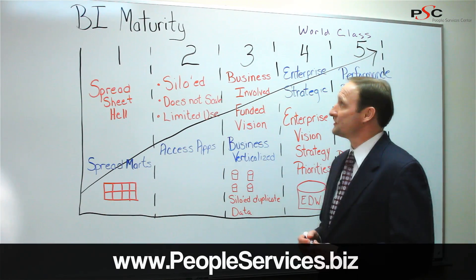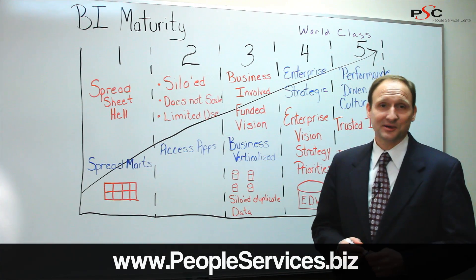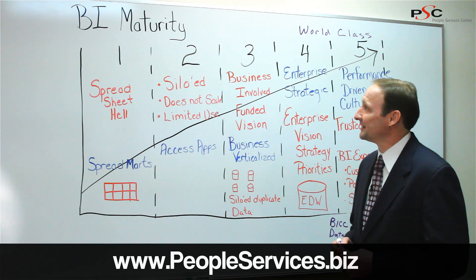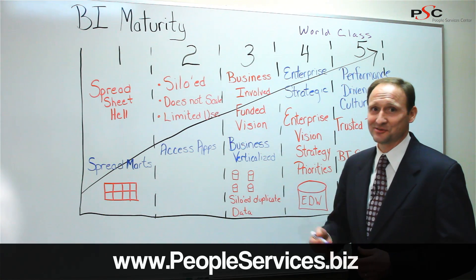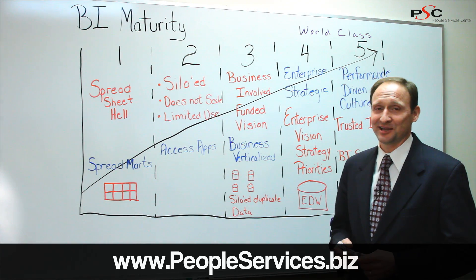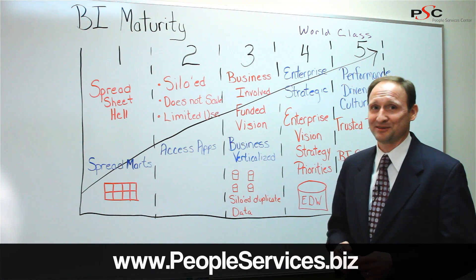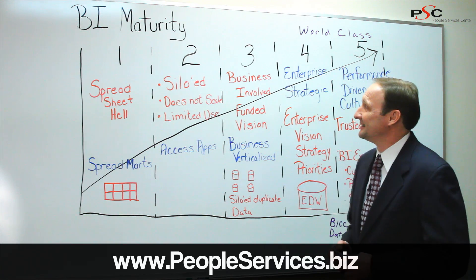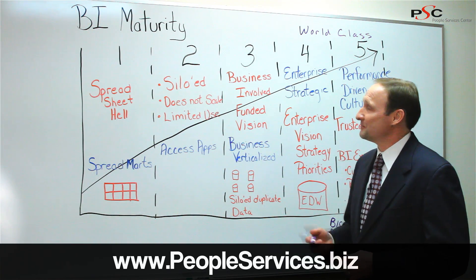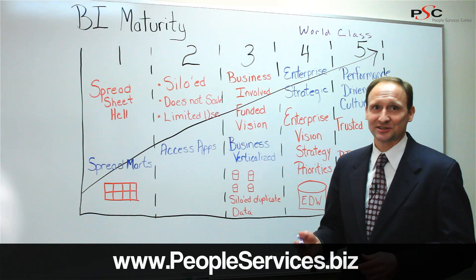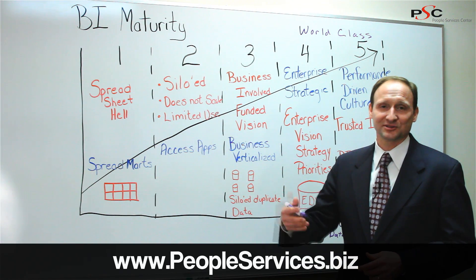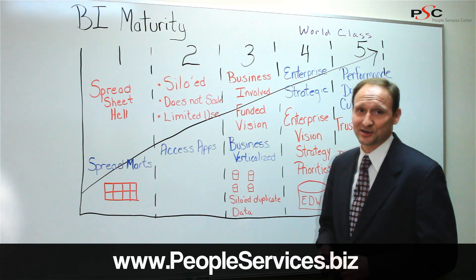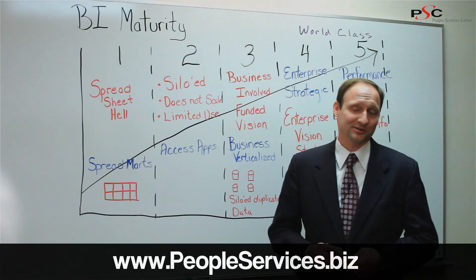This whiteboard session is on business intelligence maturity. Like with my kids, when they get to the age of 13 they can't just become 20. Maturity suggests that there are logical steps that people go through, and in business intelligence it's very similar.